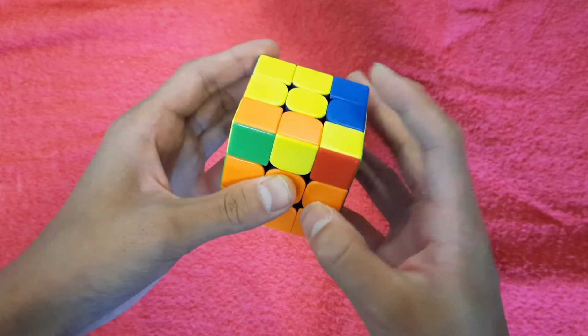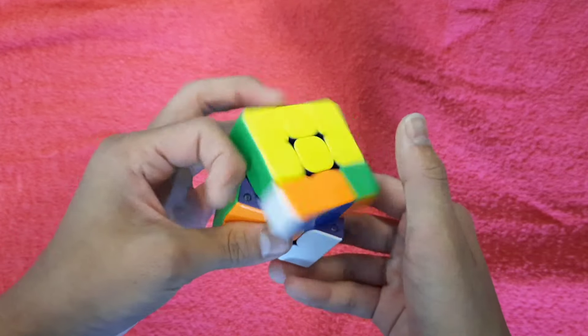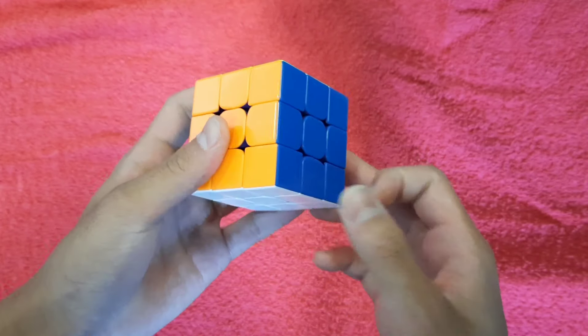And then I got this OLL, and I saw these two bars, so I was anticipating a PLL skip, and I got it, and that was a 6.15. Bye!